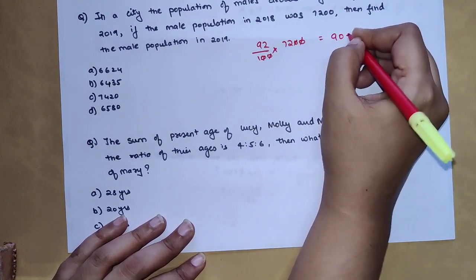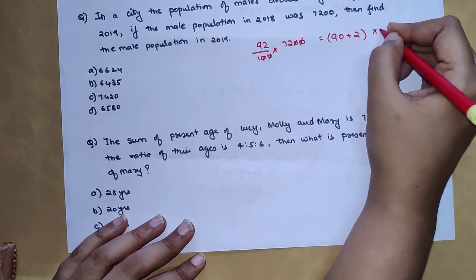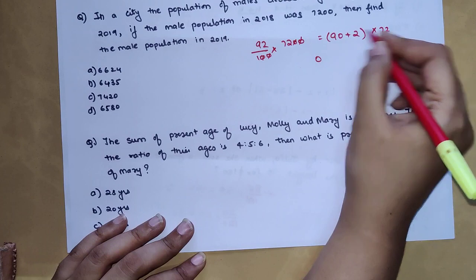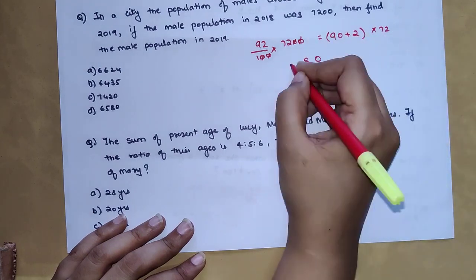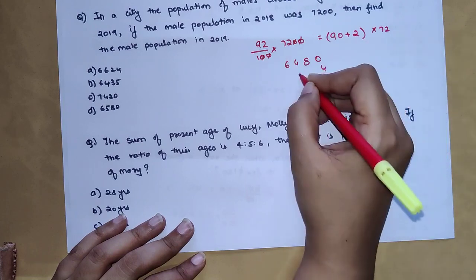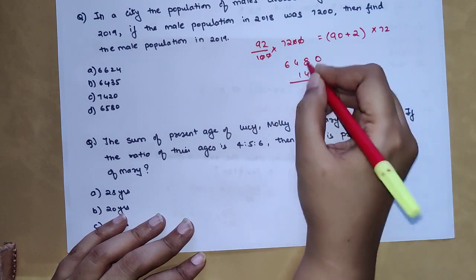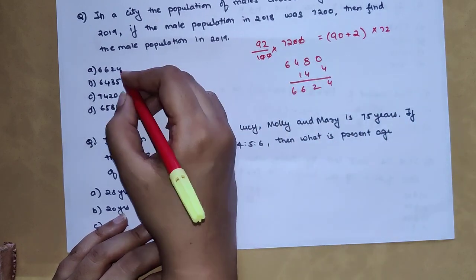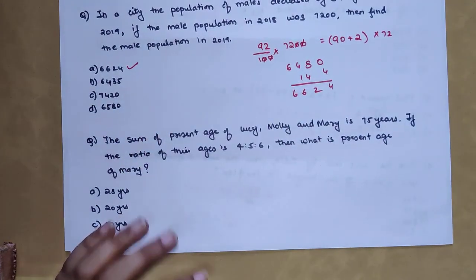When you multiply 92 into 72 - please understand you can split 92 as 90 plus 2 into 72, it becomes easier. So we have 0, then we have 18, 1 carry, so 64, and you just have to multiply twice which is 4 and 144. When you add them you have 4, 2, 1 carry, 6, 6, 2, 4. So option A is your correct answer.